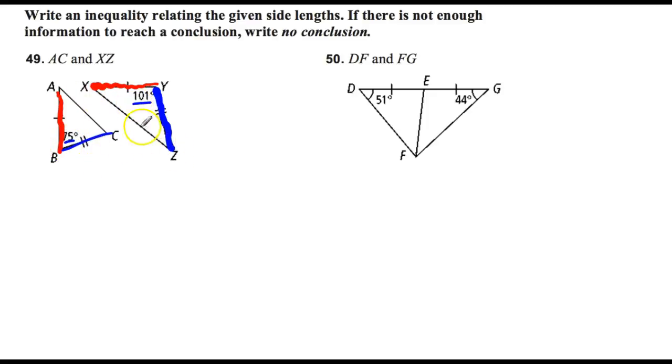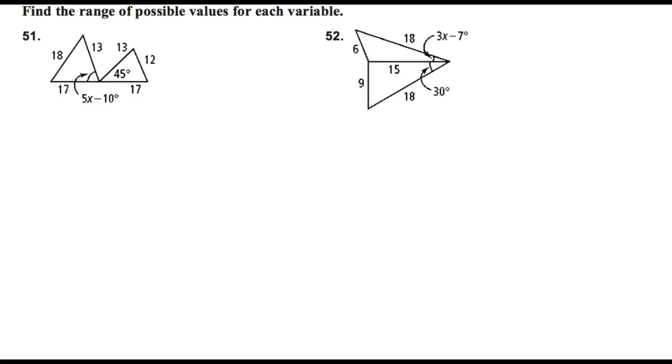101 is larger than 75. So I know XZ must be greater than AC. Or in this case you can say AC is less than XZ there. Do the same thing over here for number 50. And just take a note, right here on number 50, do you see that one arc mark here and one arc mark right there? Don't get confused. It's not saying that those angles are congruent. It's just saying like 51 is this angle and 44 is this angle. So it's not a typo there. It's just a different way of notating it on a diagram.